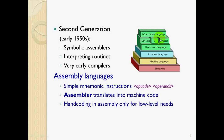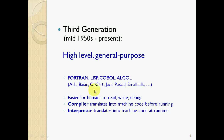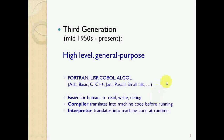The third generation emerged in the mid-1950s and continues to the present. High-level, general-purpose languages include FORTRAN, LISP, COBOL, and ALGOL. Some further examples are Ada, BASIC, C, C++, Java, Pascal, and Smalltalk. These are easier for humans to read, write, and debug. A compiler translates the code into machine code before running, which takes some time.